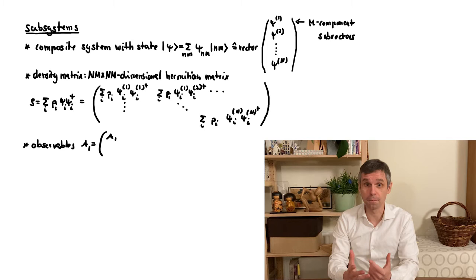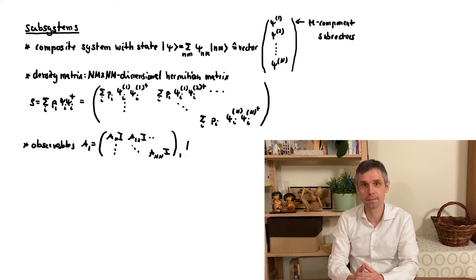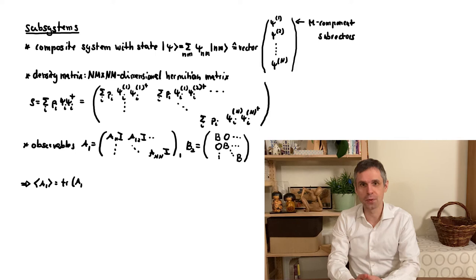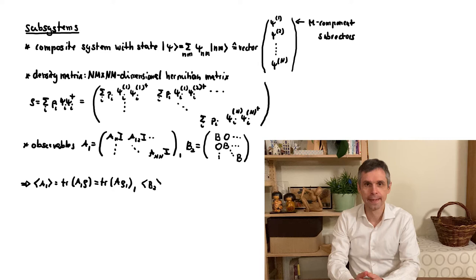Now recall that we encountered a similar block structure for observables for the different parts of the system which we denoted as A1 and B2. This structure then leads to a significant simplification when we work out expectation values of these observables. We obtain these by our general rule namely taking traces of the associated operator multiplied by the density matrix. And the simplification is that we can rewrite this in terms of smaller matrices, namely the observables A or B for just the isolated parts times the corresponding density matrix ρ1 or ρ2.